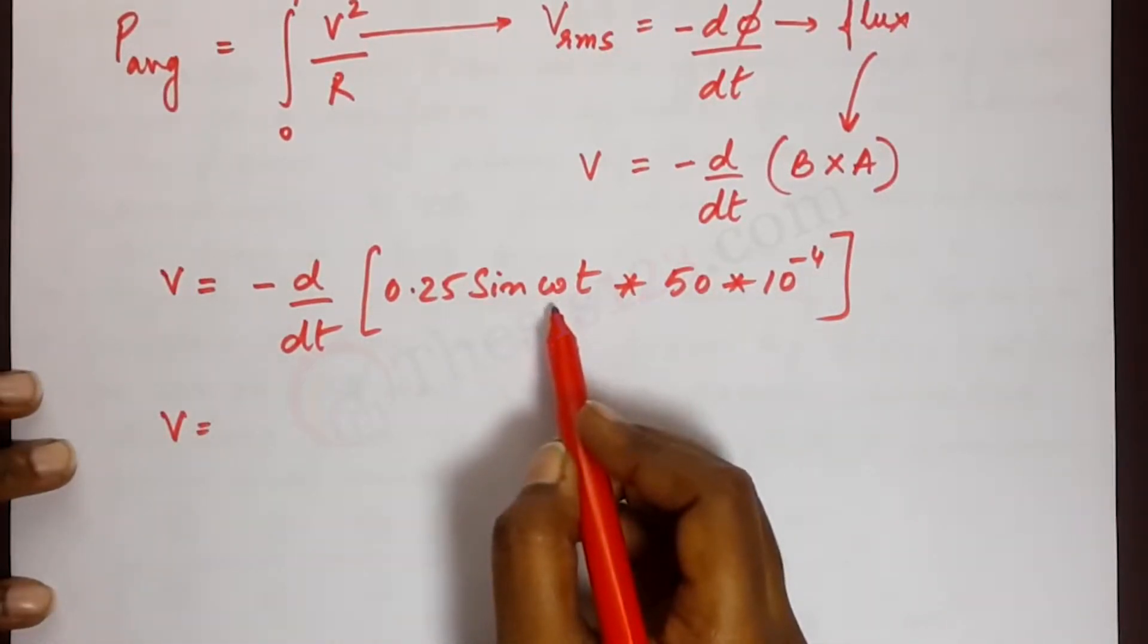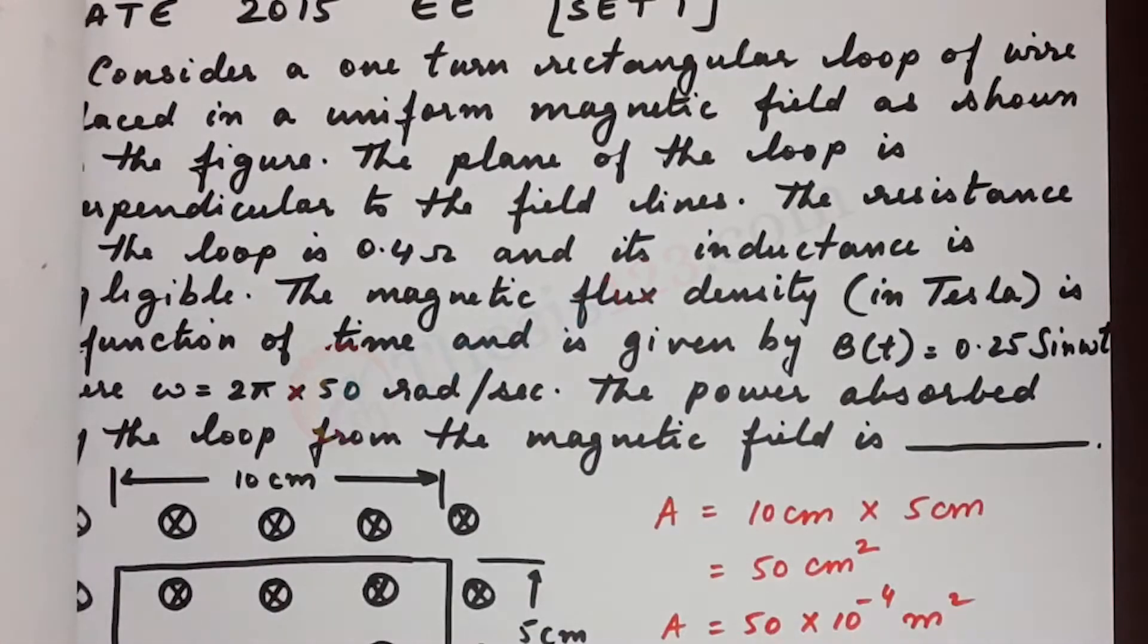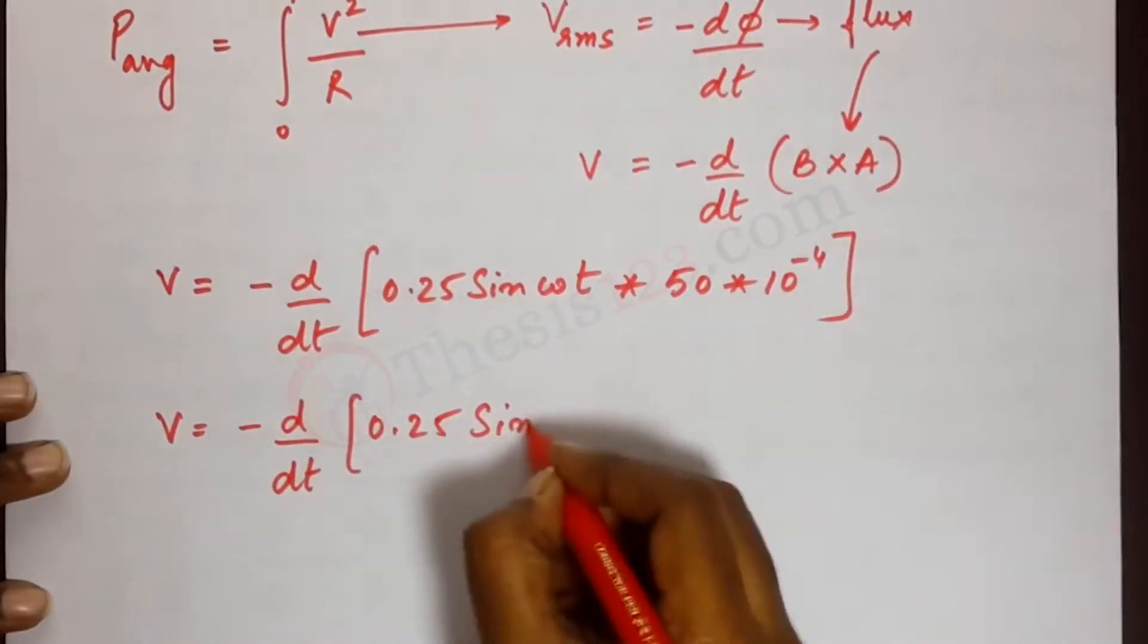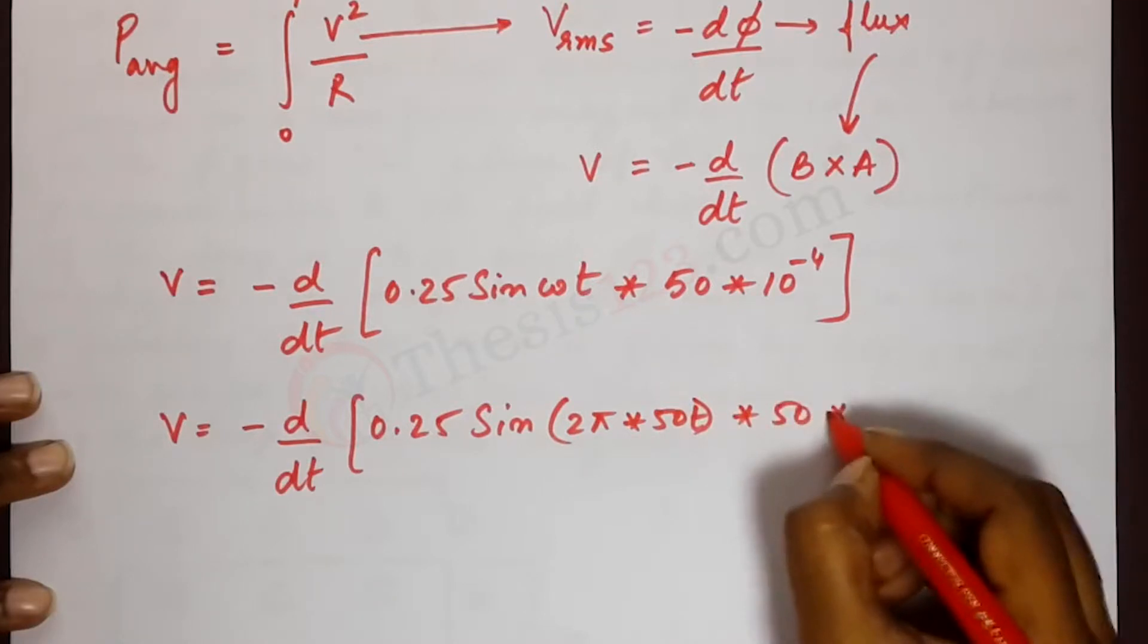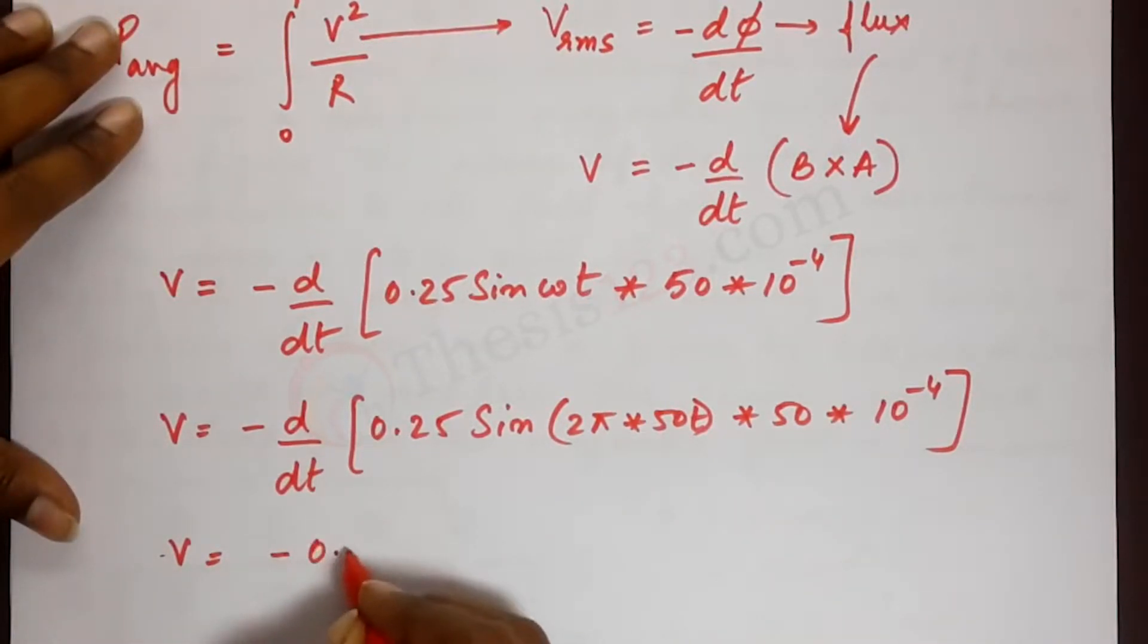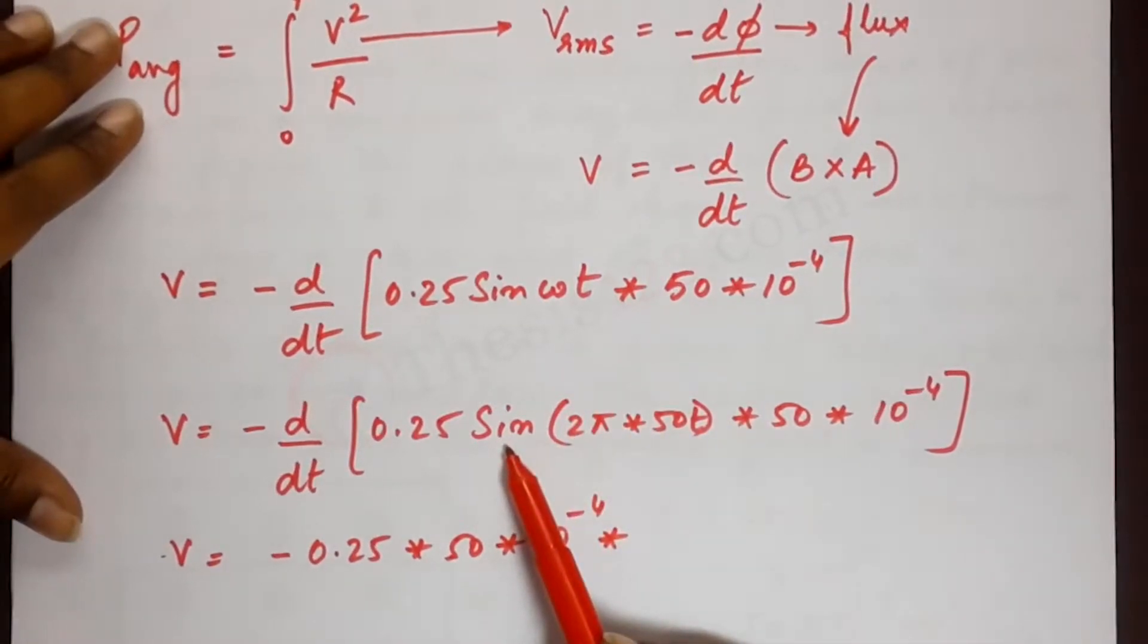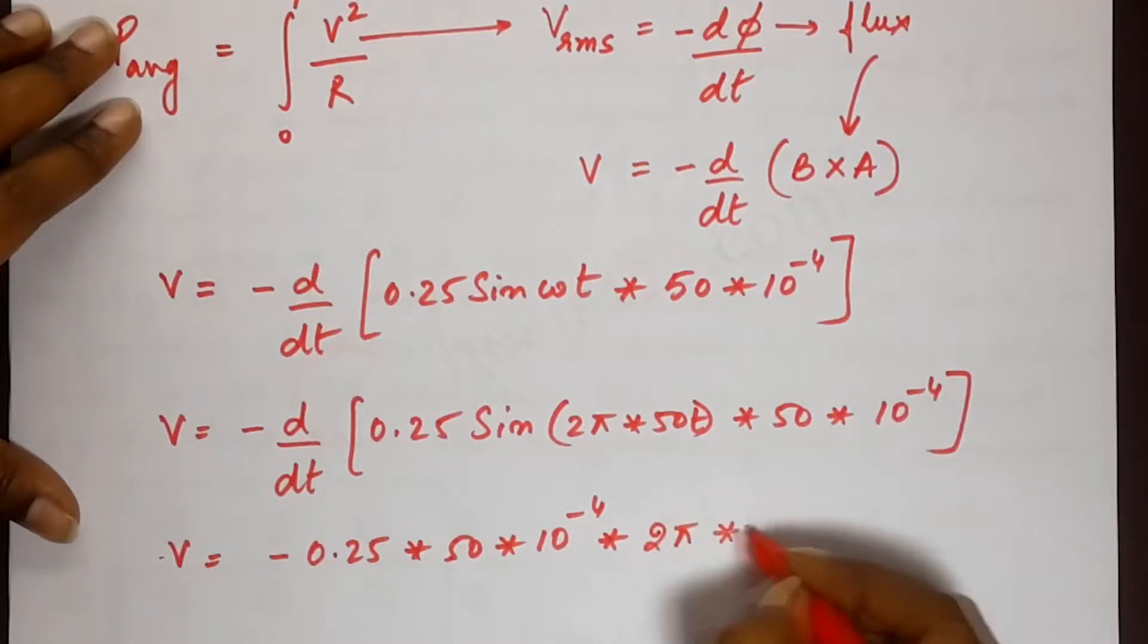So before we do that, let's write down what omega is. We have been given what omega is, right? Omega is 2 pi into 50. So that's minus d by dt 0.25 sin of 2 pi into 50 t into 50 into 10 power minus 4. Now if we differentiate this we get minus 0.25. Let's take all the constants out. Minus 0.25 into 50 into 10 power minus 4 into. Now the differentiation of sine is cos. So cos of omega t into omega. So that's 2 pi into 50.